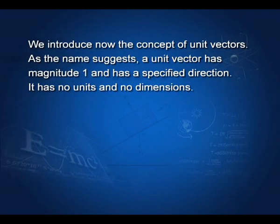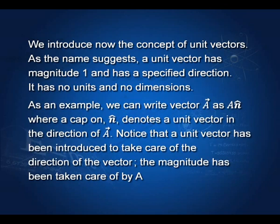We now introduce the concept of unit vectors. As the name suggests, a unit vector has magnitude 1 and has a specified direction. It has no units and no dimensions. As an example, we can write vector A as A times n-cap, where n-cap denotes a unit vector in the direction of vector A. Notice that the unit vector takes care of the direction, while the magnitude A takes care of the size.